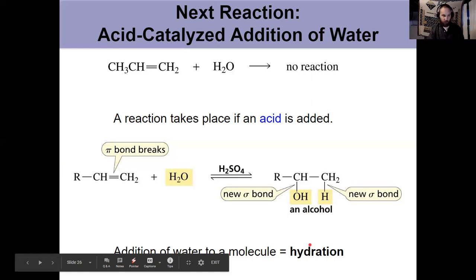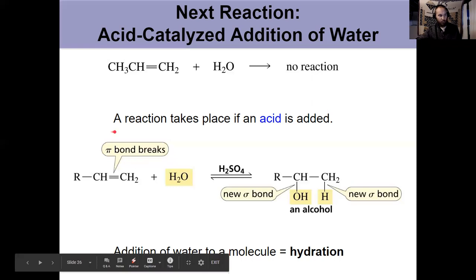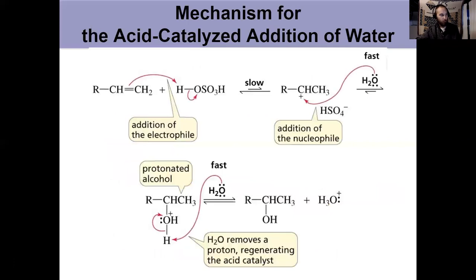So knowing the mechanism from the addition of a hydrogen halide from the last video. I recommend you pause here and try and draw the reaction out. You get an H plus from H2SO4 and then try and draw the reaction out. At least the first two steps. See if you can figure it out. And the next slide shows us what it's all about. How does this reaction happen?